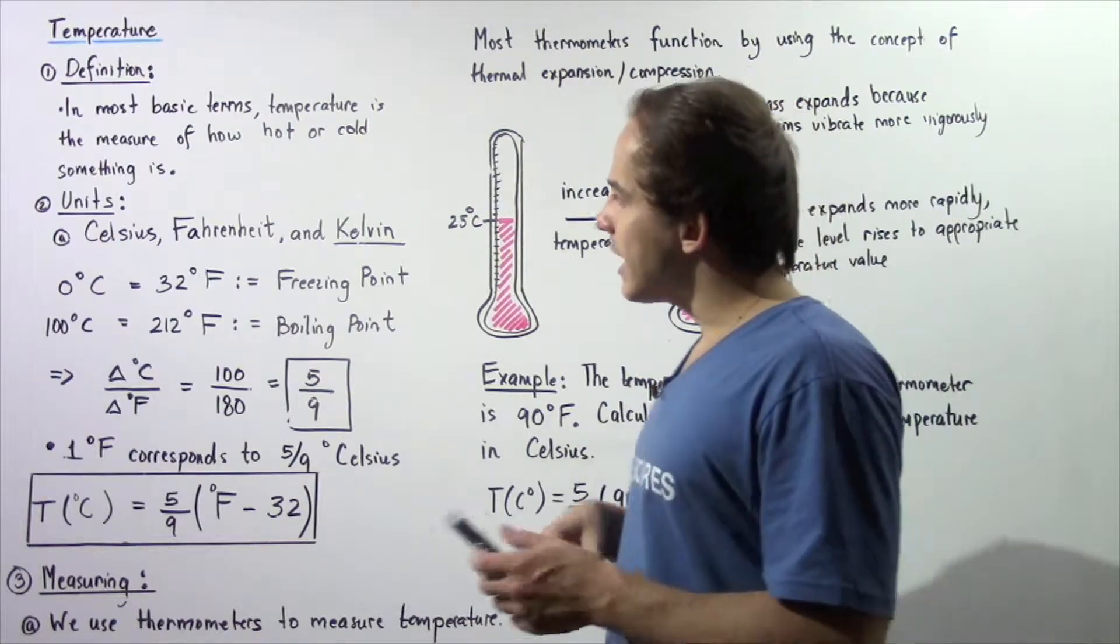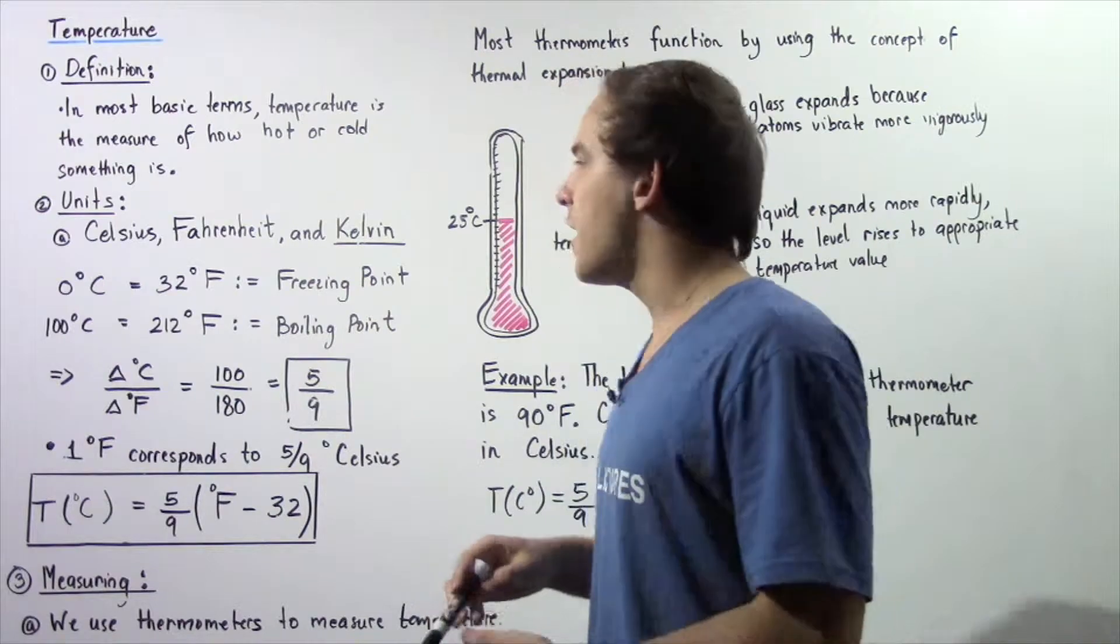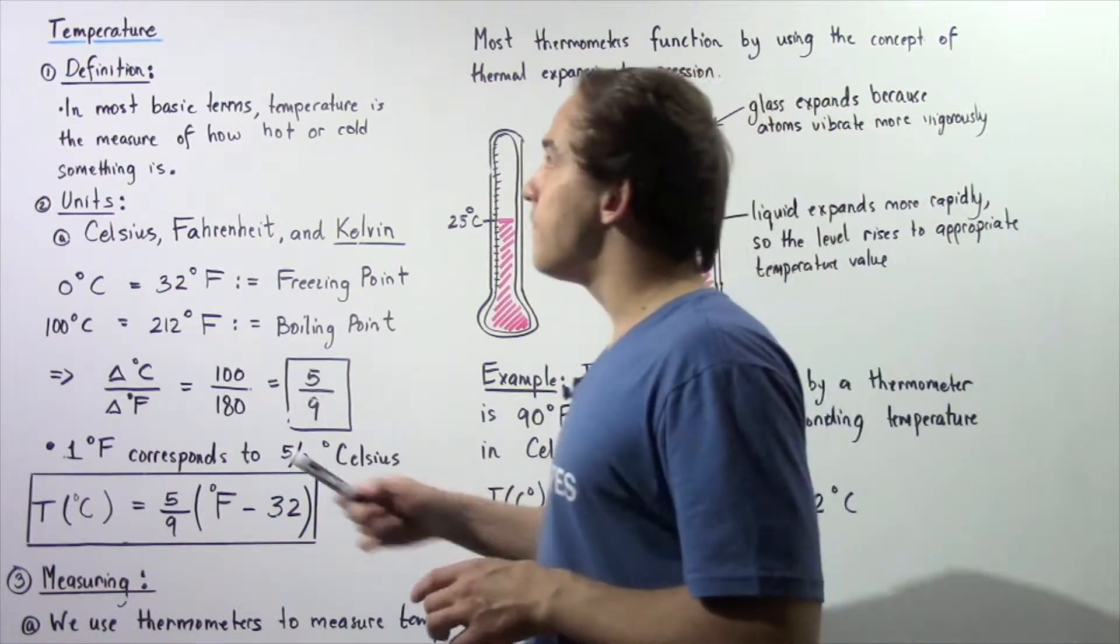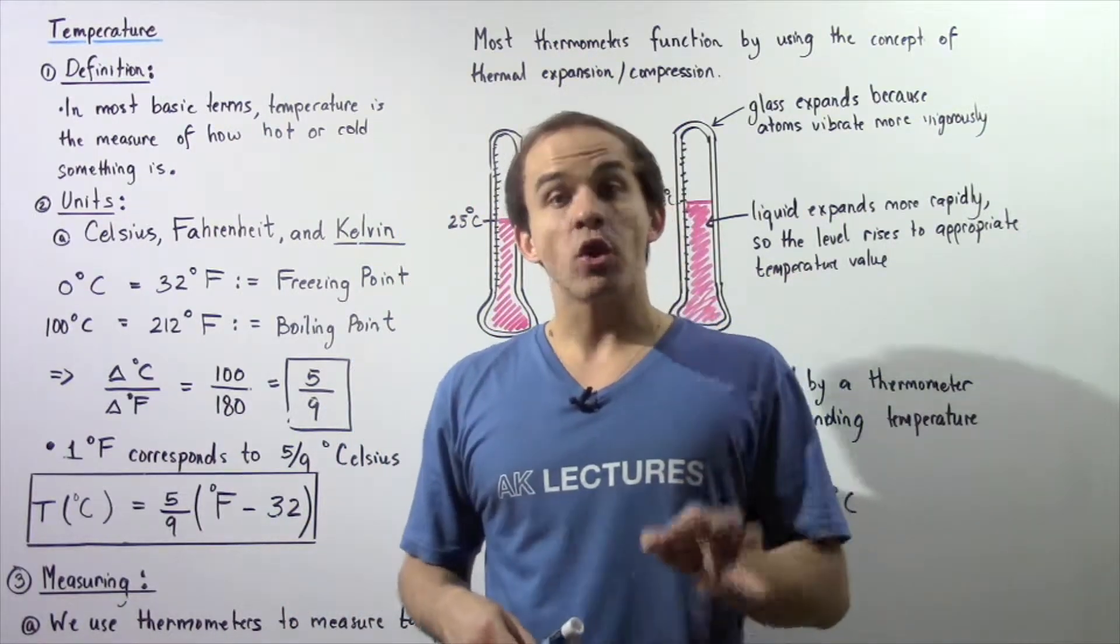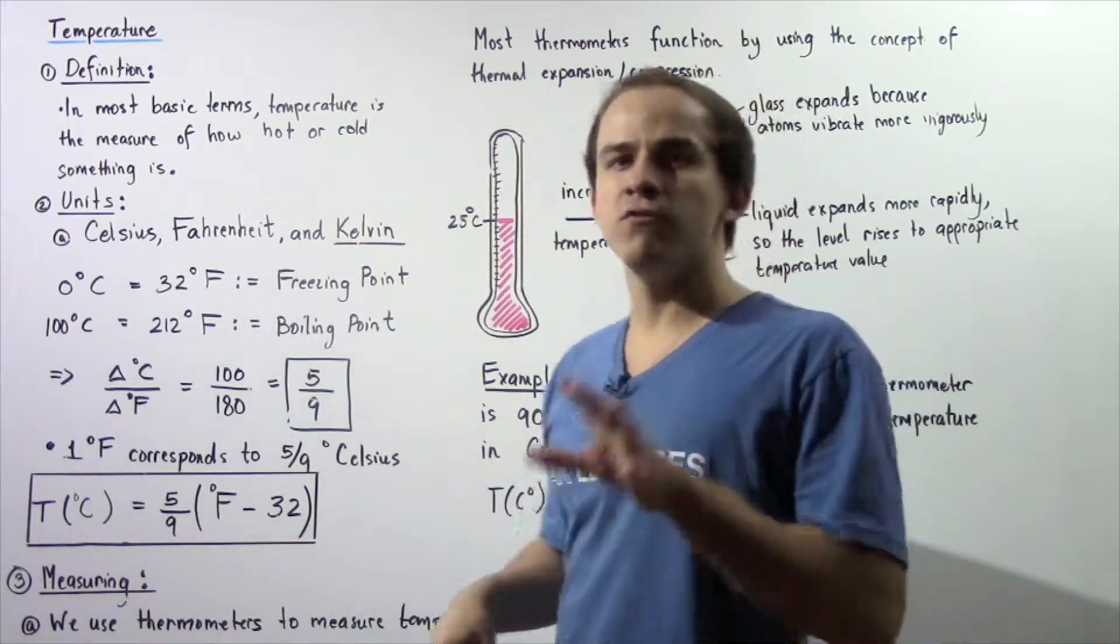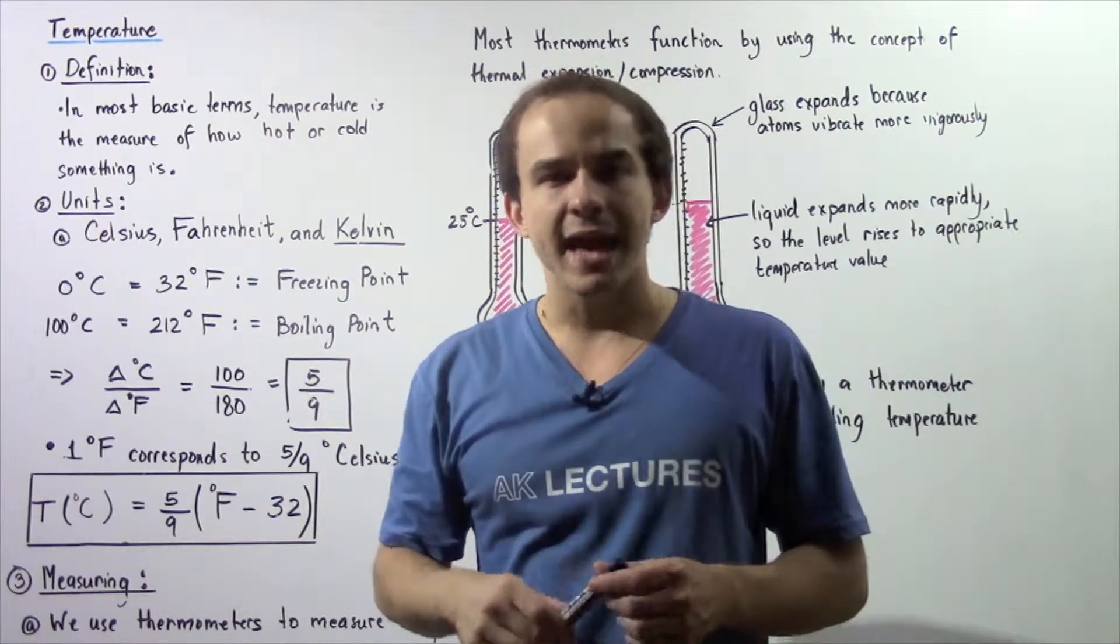In this lecture, we're only going to discuss the relationship between Celsius and Fahrenheit scales. One way in which we can define temperature is by arbitrarily choosing or assigning a value for the freezing point and boiling point of water for both the Celsius and the Fahrenheit scales.